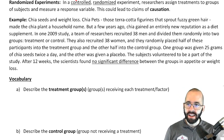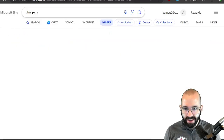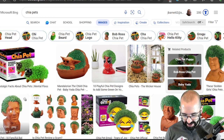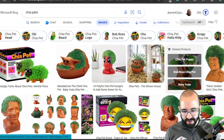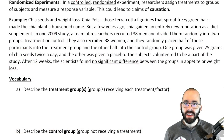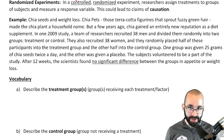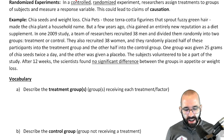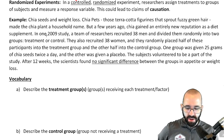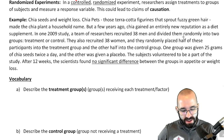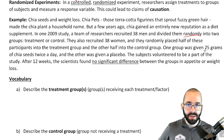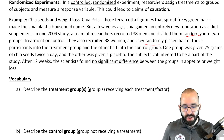Let's start with an example: chia pets. Chia pets made the chia plant a household name. A few years ago, chia gained a new reputation as a diet supplement. There was a study in 2009 where a team of researchers recruited 38 men, divided them randomly into a treatment and a control group, and also 38 women, again randomly placed into treatment and control.